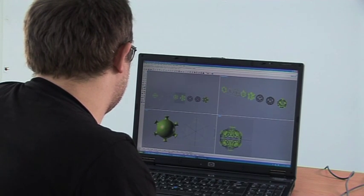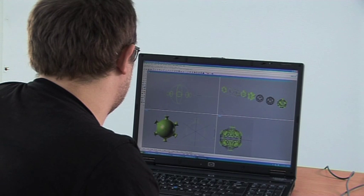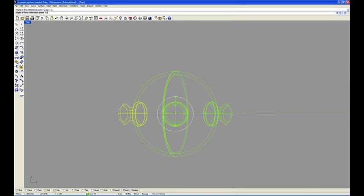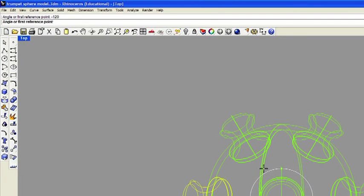Here you can see I'm going to be doing some more copying and using the array function to create a pattern of these trumpet shapes around the surface of the sphere. I'm just zooming in there so I can see a bit more detail.